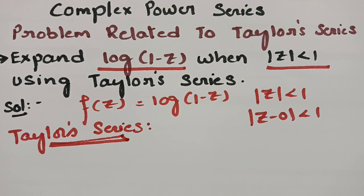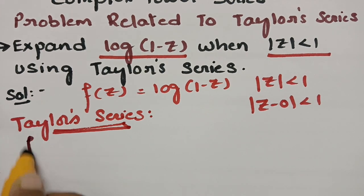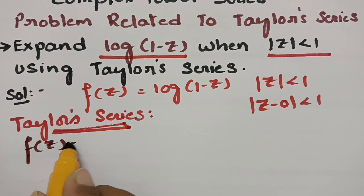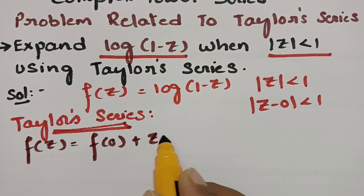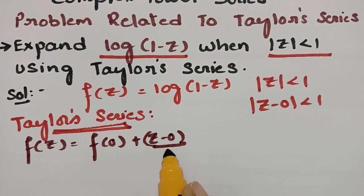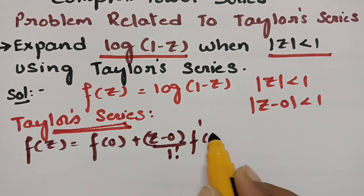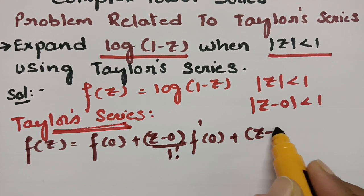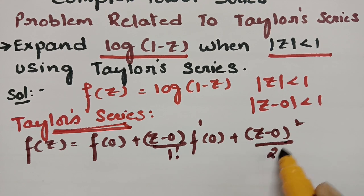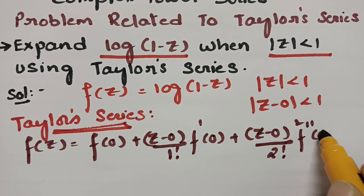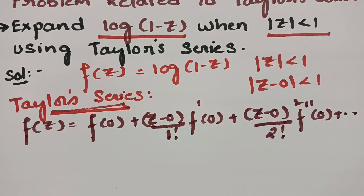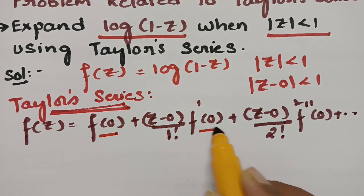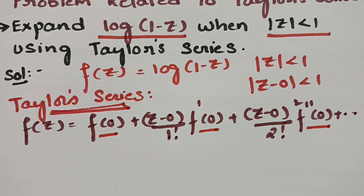So what does the Taylor series define? It defines f(z) as: f(0) + (z - 0)/1! · f'(0) + (z - 0)²/2! · f''(0) + and so on. We need to find the values of f(0), f'(0), f''(0), and so on.